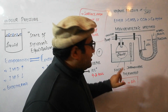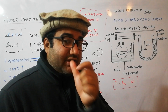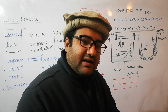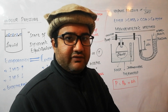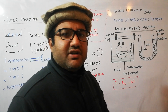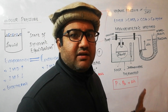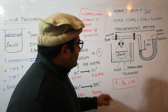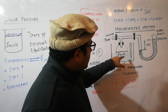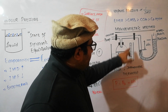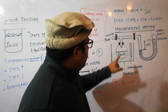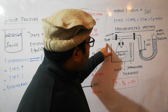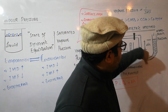The apparatus includes a thermostat, which keeps the temperature of the liquid constant at the desired value where we want to measure the vapor pressure. There is a round-bottom flask with a thermometer. The flask is connected through a tube to a vacuum pump at one end and to a manometer at the other end.